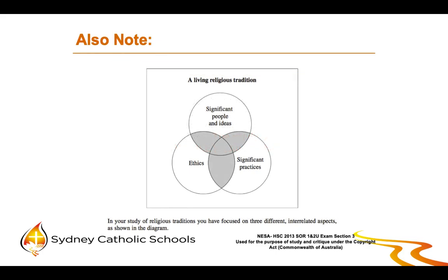In the 2013 HSC Studies of Religion exam, Section 3, the NSW Board of Studies placed a diagram showing that Christianity as a living religious tradition is found at the intersection of significant people and ideas — for example, Paul of Tarsus — significant practice — for example, baptism — and ethics — for example, bioethics. You could ask: how does Paul of Tarsus influence our ideas about baptism, and how does the understanding of baptism as a sign, symbol, and sacrament influence our understanding of ethics such as bioethics? If you can answer a question like that, you will most likely be showing Christianity as a living religious tradition.